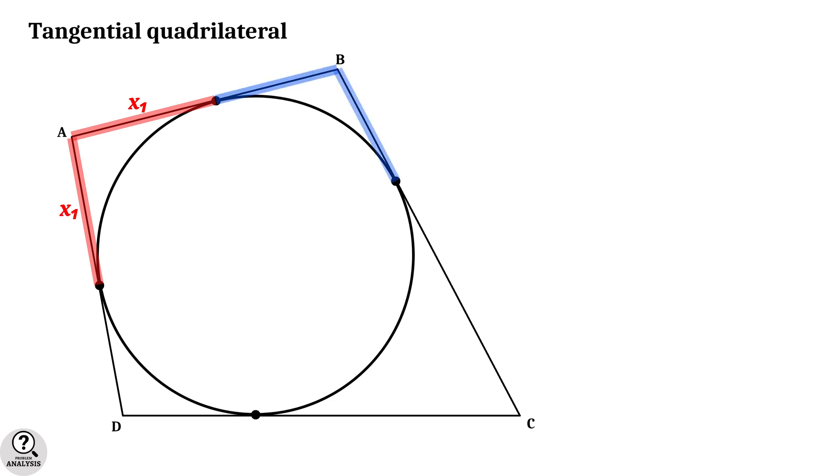Next consider these two parts. By the same reason, they are also tangents drawn to the circle from a single point. And hence they are equal. Let's say x2. Similarly, there are two more pairs of equal tangents. We can call them as x3 and x4.